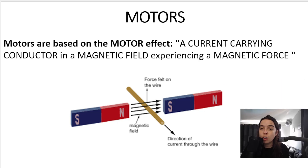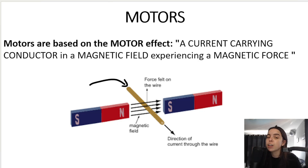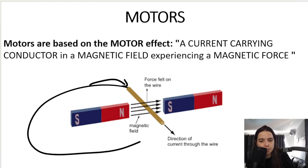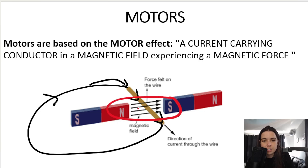What does current-carrying conductor mean? This wire over here is a current-carrying conductor — it's a wire that carries current. The reason it carries current is because it's connected to a circuit, and current flows through it. You can see the current coming down along the wire. When we place that current-carrying conductor within a magnetic field — here are two magnets providing that field.